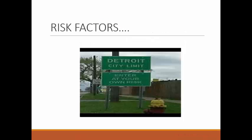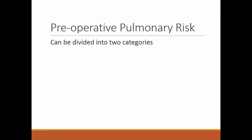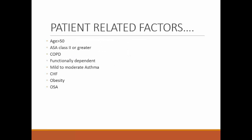Risk factors can be divided into two categories: patient-related risk factors and surgical/procedure-related risk factors. Patient-related risk factors shown to increase risk of postoperative pulmonary complications include: age greater than 50, ASA class greater than two, COPD, functionally dependent status, uncontrolled asthma, CHF, obesity, and OSA.